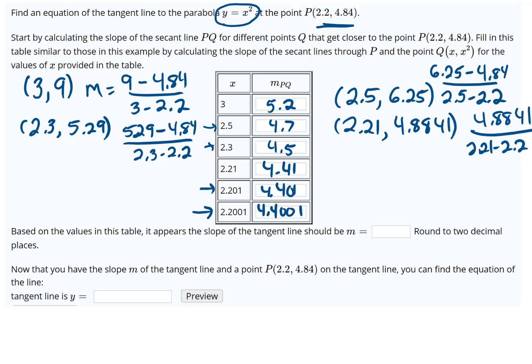Based on the values in the table, it appears the slope should be—looks like we're approaching 4.4. They said round to two decimal places, but when we round that, the second decimal place is 0.